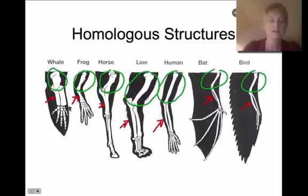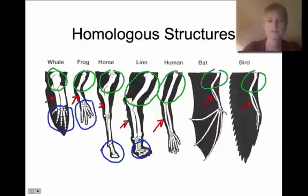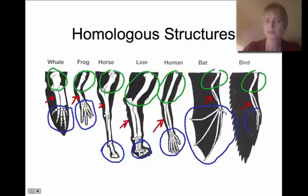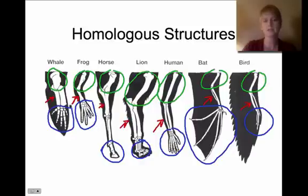Change my color here. And then here in these what we call phalanges, we see that there are a lot of separate bones, not so much with the horse, but we see the separate bones in the lion. We see these separate bones here. You can see these in the bat and in the bird. So there are differences in the bone structure, but we see a lot of homology. We see striking similarities in all of these limb bones.